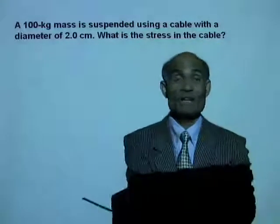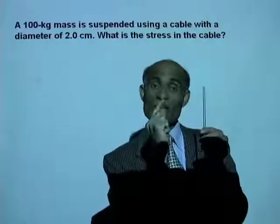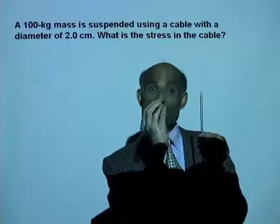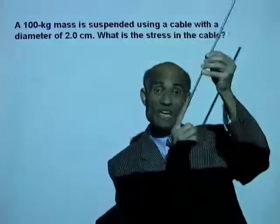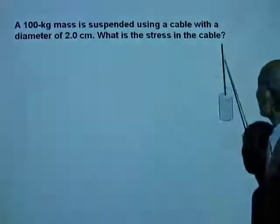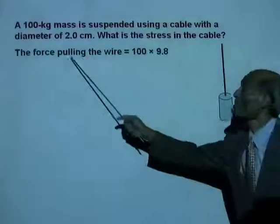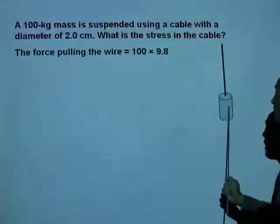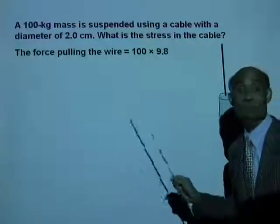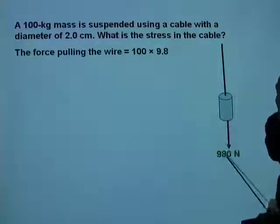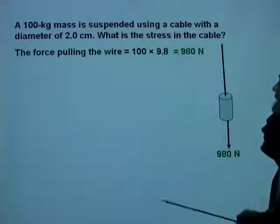The stress is caused by the weight of the object hanging from it. What is the area on which that weight is acting? It is the cross-sectional area of the cable, which is a circle. The force pulling the wire is the mass multiplied by g: 100 kilograms times 9.8 meters per second squared, giving 980 newtons. So this cable is being pulled by a force of 980 newtons.